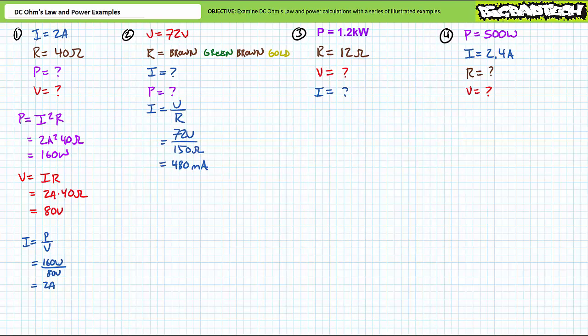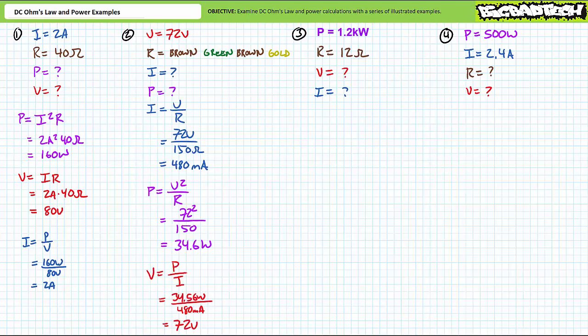Our second problem features a resistor with a color code of brown, green, brown, gold, known to be experiencing a 72 volt drop. We're being asked to solve for the current through it and the power dissipated by it. A color code of brown, green, brown, gold means 1, 5 followed by one zero — or 150 ohms. Current is equal to voltage divided by resistance. Substituting in our given values yields 480 milliamps of current. Power is equal to voltage squared divided by resistance. Substituting in our given values yields 34.6 watts of power. The supporting calculation verifies this result: voltage is equal to power over current. Roughly 34.6 watts over 480 milliamps does indeed yield 72 volts.